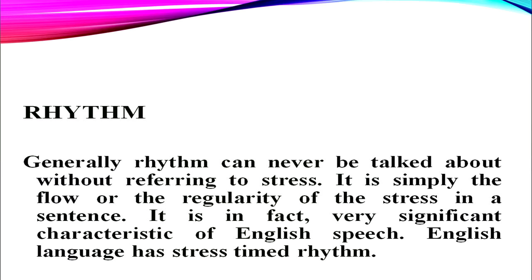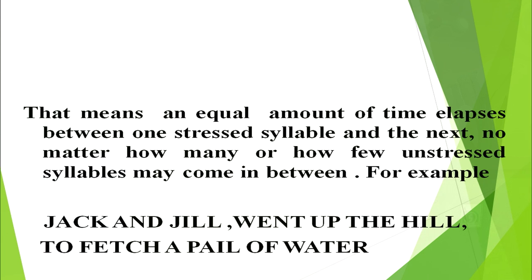Let's talk about rhythm. Rhythm can never be talked about without referring to stress — it is simply the flow or regularity of stress in a sentence. It is a very significant characteristic of English speech. English language has stress-timed rhythm, meaning an equal amount of time elapses between one stressed syllable and the next, no matter how many or how few unstressed syllables may come in between. For example: 'Jack and Jill went up the hill to fetch a pail of water.'